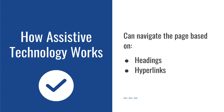Assistive technology can navigate documents based on headings and hyperlinks, so it's really important that we make sure these pieces are properly formatted. When we only use visual stylings like big bold text, we aren't including the necessary tagging structure for navigation purposes. So that's what I'm going to show you how to do today, and with that, we're going to jump over to Blackboard.